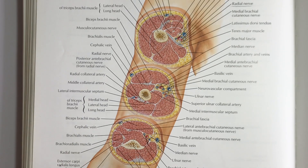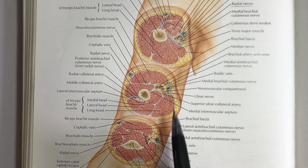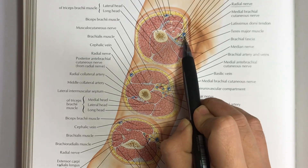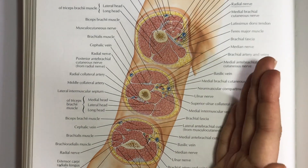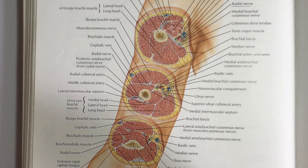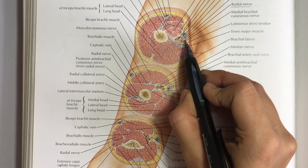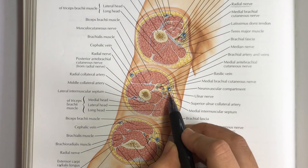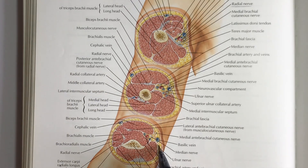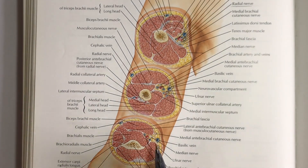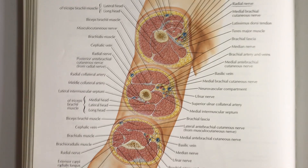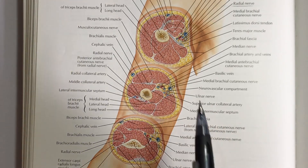The posterior relations of the brachial artery are therefore the profunda brachii artery, the radial nerve, and the triceps muscle. For the medial relations, the basilic vein lies medial to the brachial artery throughout. The ulnar nerve also lies medial to the brachial artery throughout, as seen in cross section.